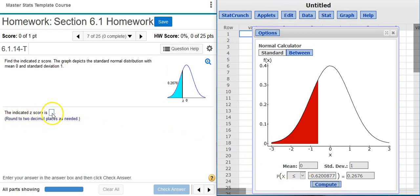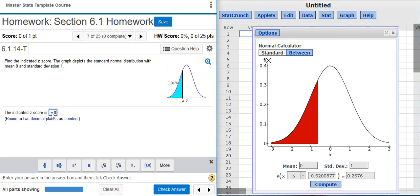We are asked to round to two decimal places, so that gives me negative 0.62.